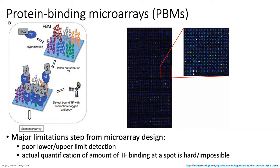After washing away all unbound TFs, you use antibodies coupled with a particular fluorophore and wash them over the array. You then do imaging to assess how much fluorescence is present on any given spot, and in principle the amount of fluorescence is proportional to the amount of TF binding at that spot. One amazing thing about PBMs is that even with just 44,000 different DNA oligos, you can cover all possible 10-mers and efficiently represent almost all possible TF binding sequences.